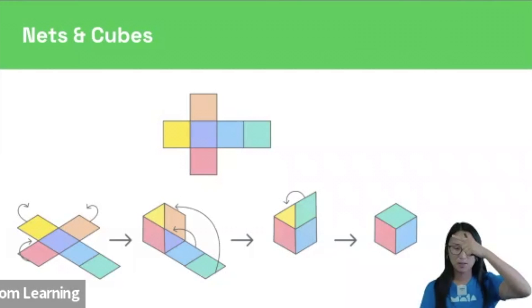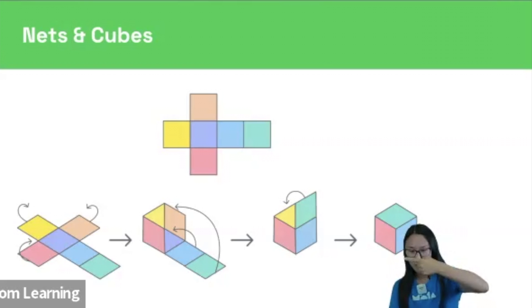So the opposite of what this process is showing. If you're going that way, you start with a cube, you peel it open and then you end up with a net.